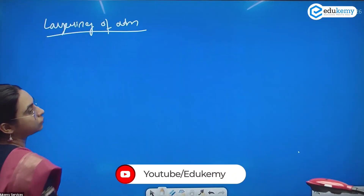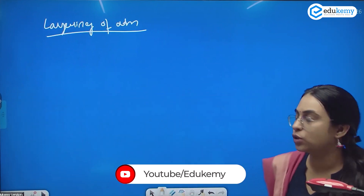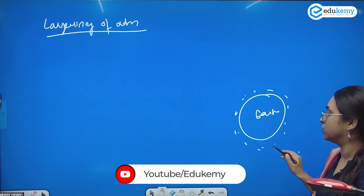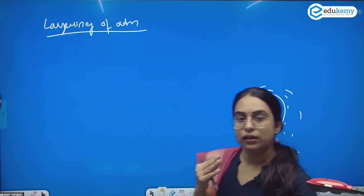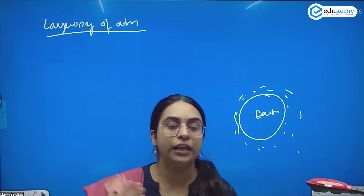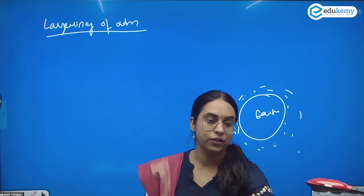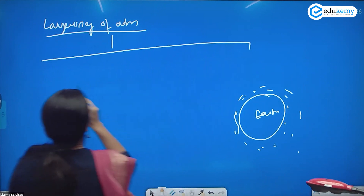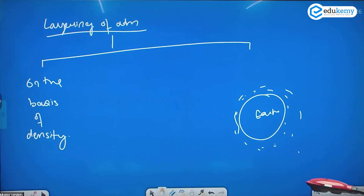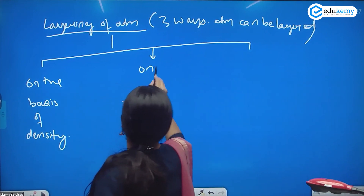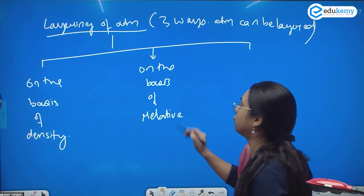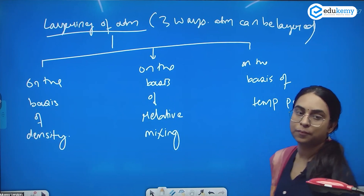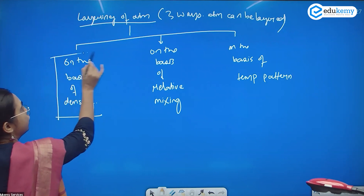Moving on to the layering of atmosphere. We know that atmosphere is a thick blanket of gases surrounding the Earth. This atmosphere can be layered in three ways: one is on the basis of density, the second is on the basis of relative mixing, and the third is on the basis of the temperature pattern.